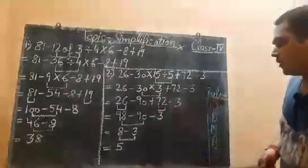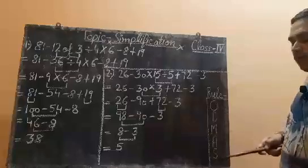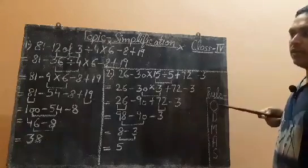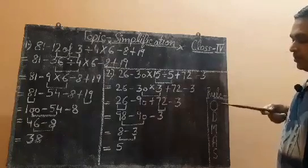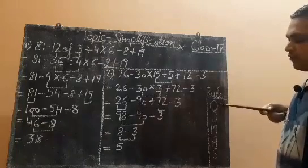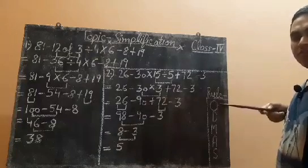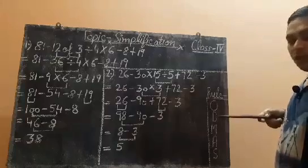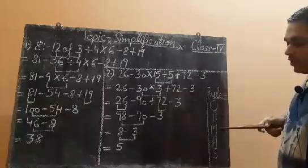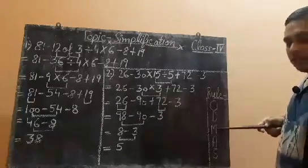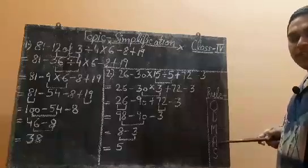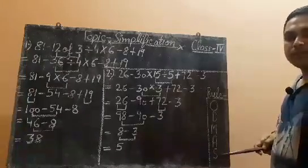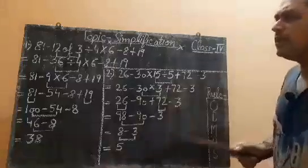There is one rule in maths called ODMAS. You have to follow this rule and solve accordingly. In the question, first you will solve 'of' — off means multiplication. Second you will solve division. Third you will solve multiplication. Fourth you will solve addition, and lastly you will solve subtraction. Now just see how we will do that.